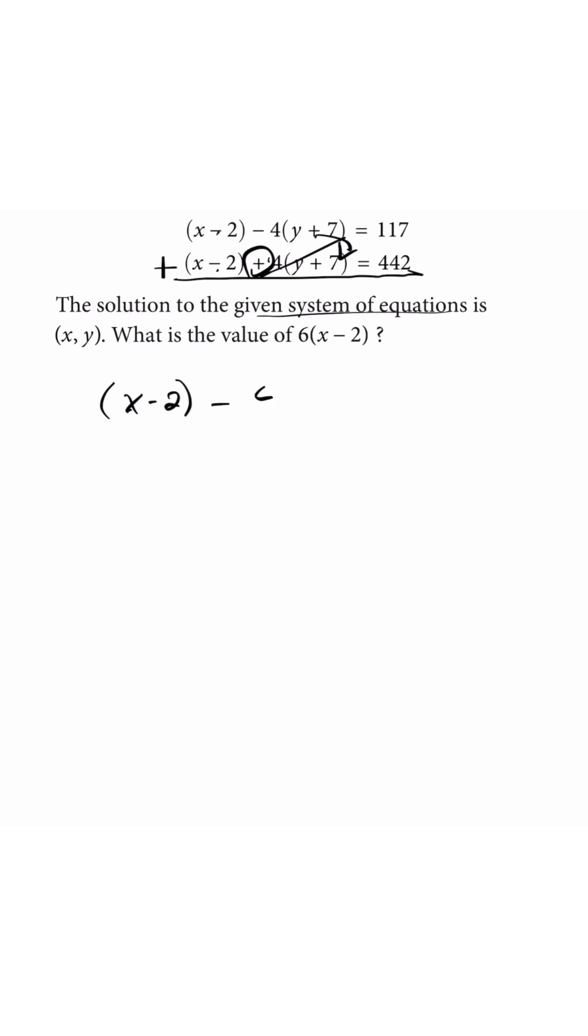So I'm just going to type everything in the question, because I'm going to do the math now. Just watch. Okay, so let's add these to each other. 2 times x minus 2 equals to 559.